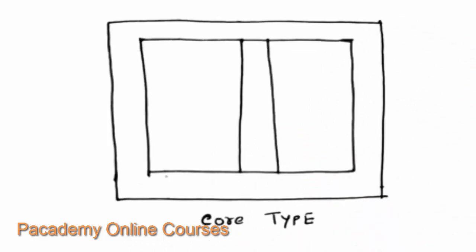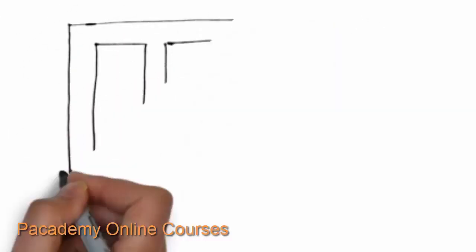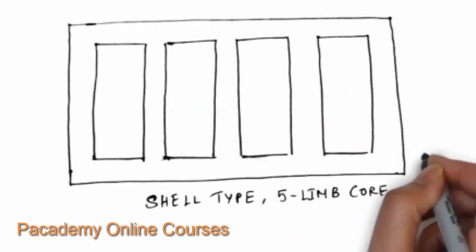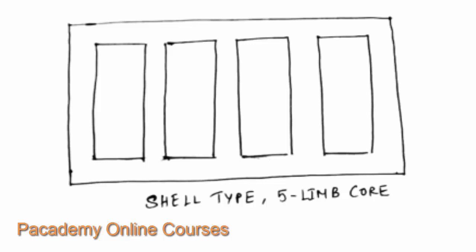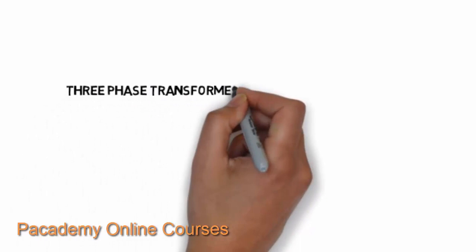The three-phase transformer has a construction type of core type. In a core type transformer, there will be three limbs and the windings will be done on each of these three limbs for the three phases. It is also possible to have a five-limb construction in the case of a shell type transformer, where the winding happens on each of the three central limbs with sandwiched interleaved winding of primary and secondary for each phase.